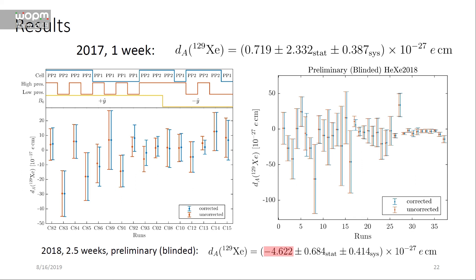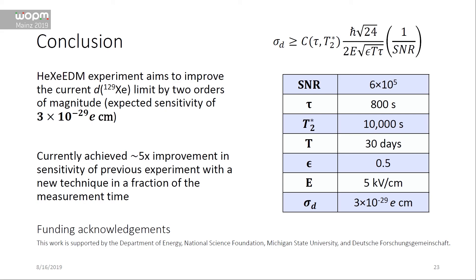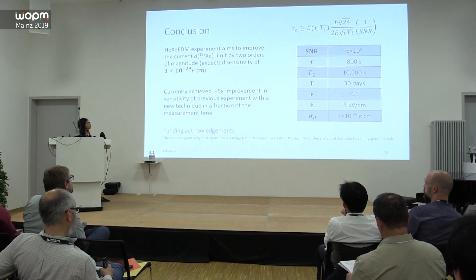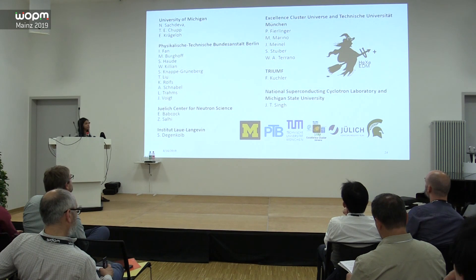We are currently analyzing a two-and-a-half-week run from 2018, which shows a limit about five times better than the current limit — still blinded, but look for that soon. To conclude: we have achieved a five-times improvement in sensitivity. With the signal-to-noise already achieved and a 30-day measurement — handling the comagnetometer drift to reach 800 s instead of ~400 s — it is very reasonable to achieve a sensitivity of 3×10⁻²⁹. Thanks to my collaboration and to you for listening.